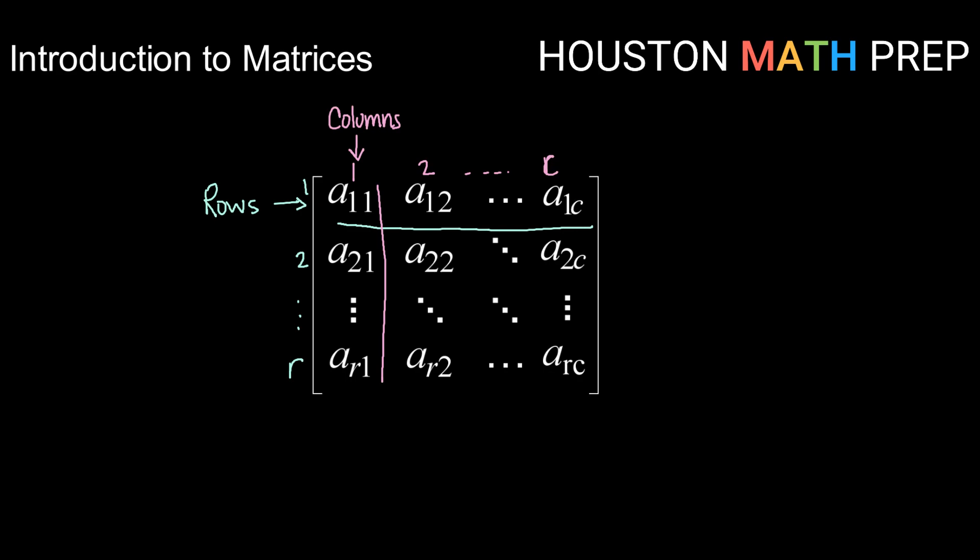Each entry falls into some row and some column. If we take a particular entry, let's say this one here, we can look at these little indices to tell what row and what column we are in.